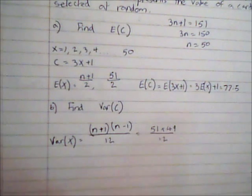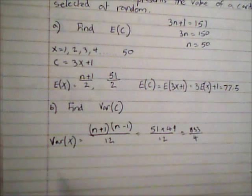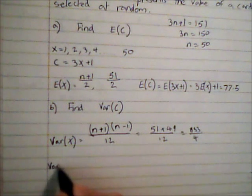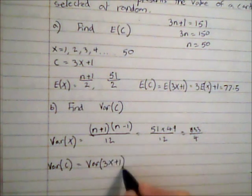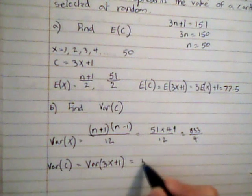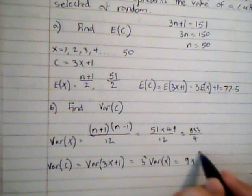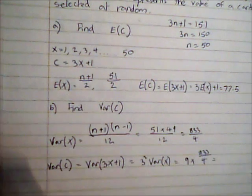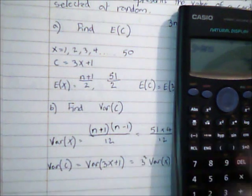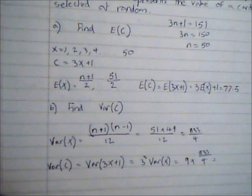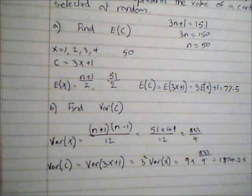I can say that Var(C) equals Var(3x+1) because that's the coding we used, so that's equal to 3 squared Var(x), which is 9 multiplied by 833/4, which gives me an answer of 1874.25 for my variance.